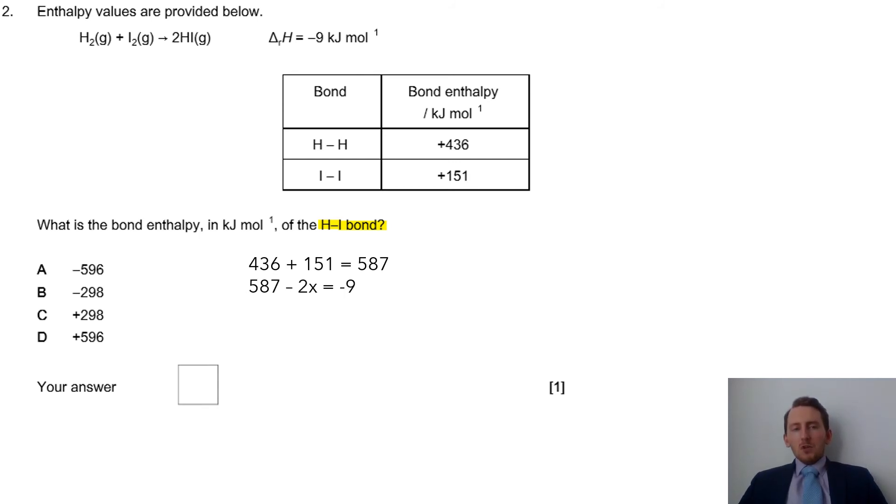Now, what this is then saying is if we're going to work it out as we would normally, we'd take the reactants and we'd minus away the products, and that would give us the overall value, which is up here at the top, which is minus 9. But we don't actually have that value, so that's why I put it as X in there, because that's the unknown.